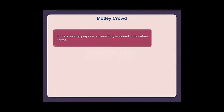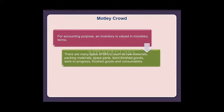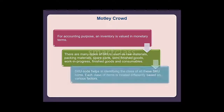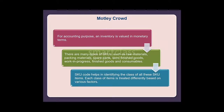Motley crowd: For accounting purposes, an inventory is valued in monetary terms. There are many types of SKUs, such as raw materials, packing materials, spare parts, semi-finished goods, work-in-progress, finished goods, and consumables. The SKU code helps in identifying the class of all these SKU items, and each class of items is treated differently based on various factors.